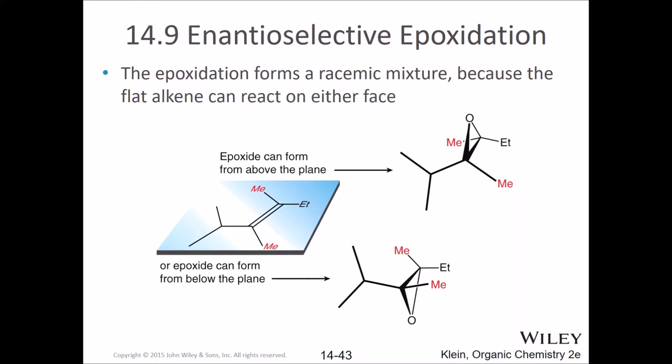Suppose you consider any double bond that you want. Lay it down in the plane — imagine you've got a table here and you've laid this epoxide down flat on top of it. The problem, of course, is that if you make an epoxide with MCPBA, it doesn't know which face it's going onto. To MCPBA, that face looks the same as that face.